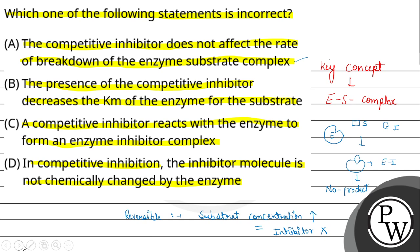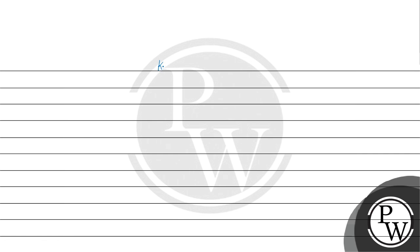Option B की बात करें: the presence of the competitive inhibitor decreases the Km of the enzyme for the substrate — यह statement incorrect है। Km value होती है substrate की concentration जो achieve करती है half-Vmax। Vmax होता है maximum velocity।